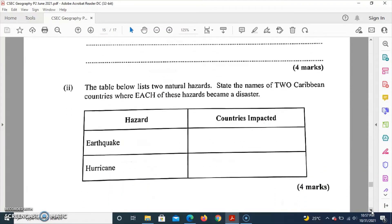Part two of part B uses a table. In the table we have two hazards. We're to state the names of two Caribbean countries where each of these hazards became a disaster. So we're to state two Caribbean countries or islands that have been affected or impacted by an earthquake and a hurricane. For the earthquake question, everybody basically wrote Haiti, because Haiti is one of the Caribbean islands that is most impacted by earthquake activity due to the transform boundary that runs close to it. If you wrote Jamaica, it will also be a good answer.